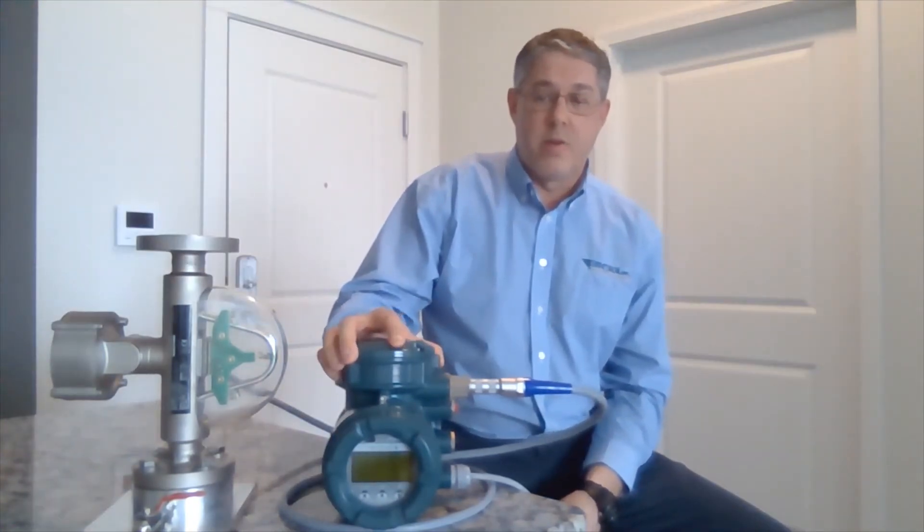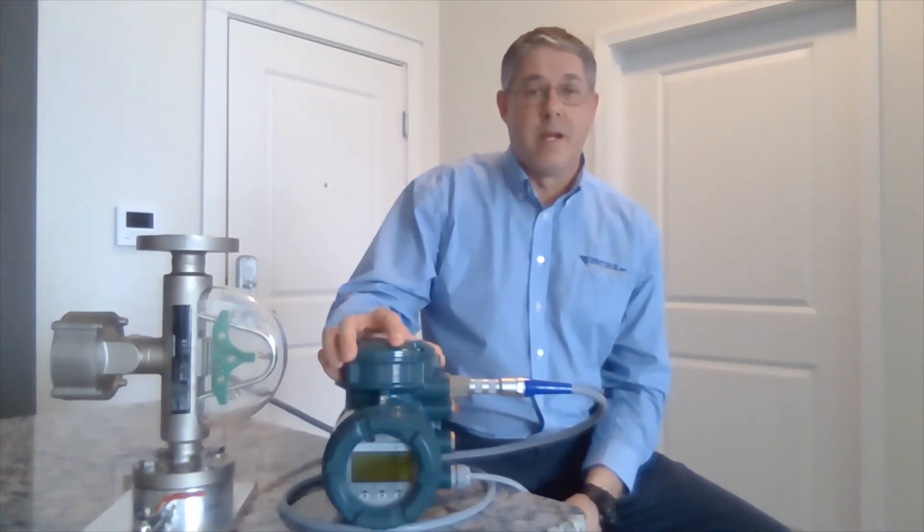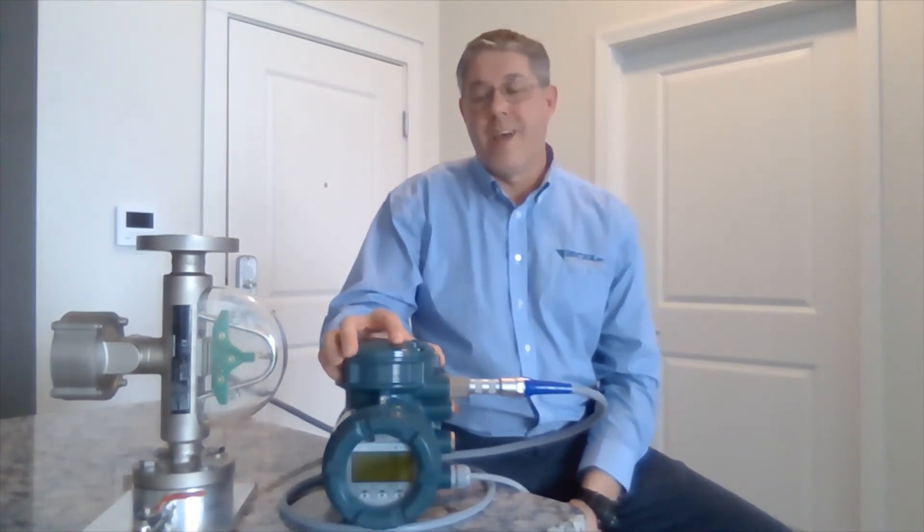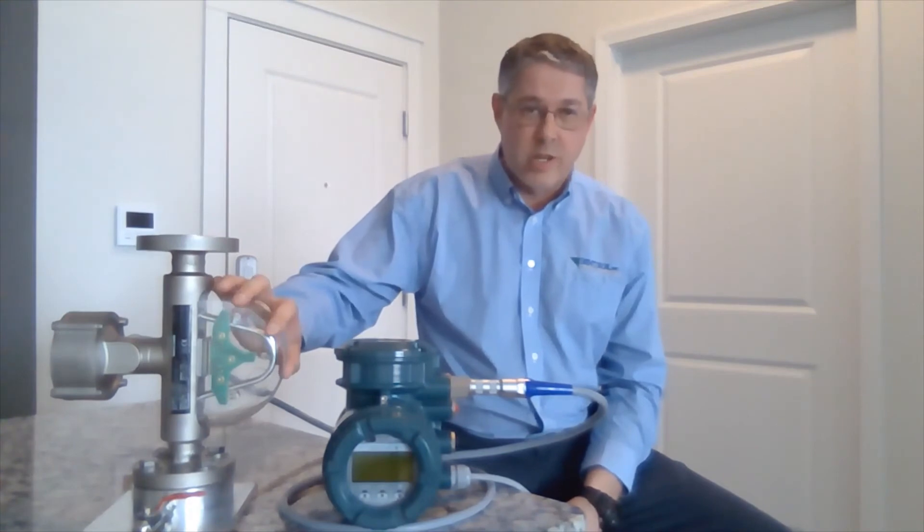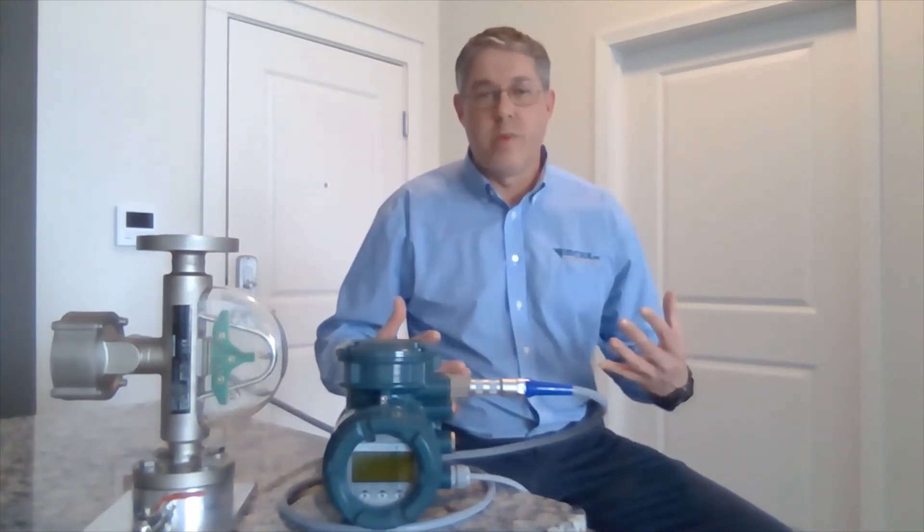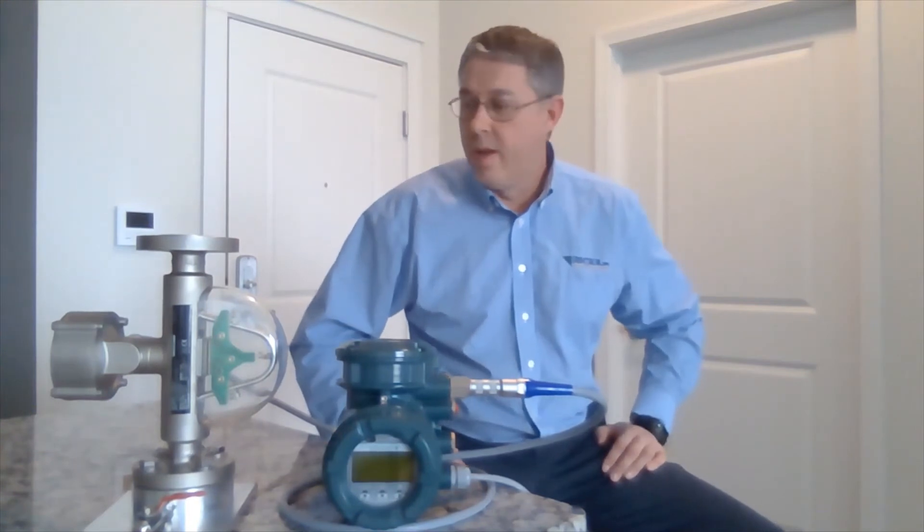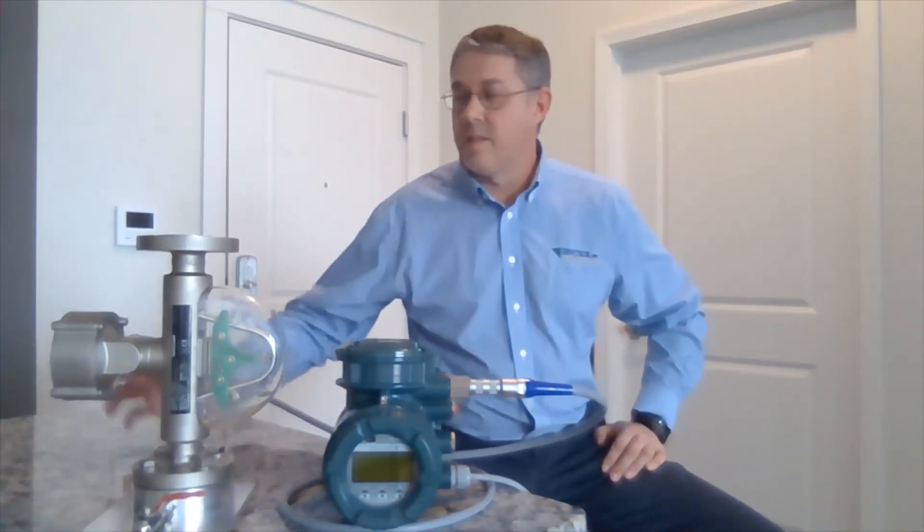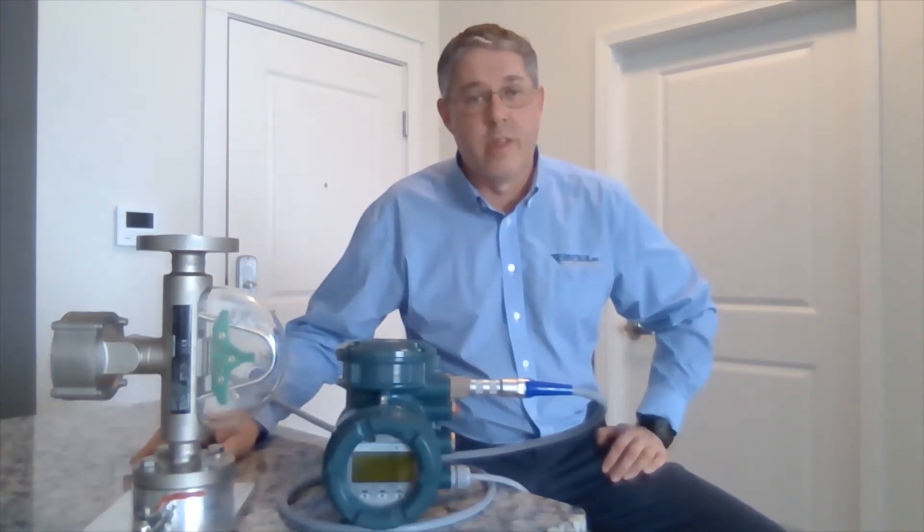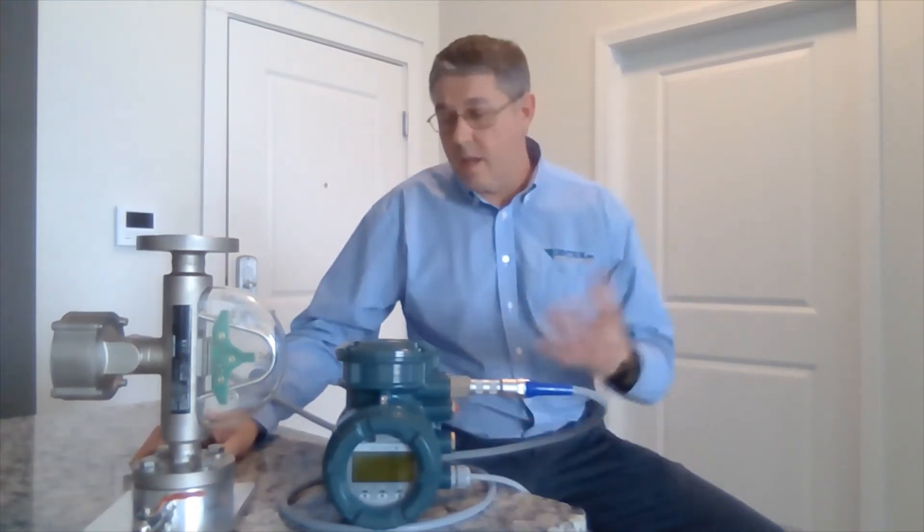The really nice thing about the Rotomass TI products is it has something called a total health or a total tube check function. This is the function where the meter will run through a verification and a tube integrity program. This basically tells us if the meter is still operating within manufacturer's specifications, and it can extend the life of the calibration of the unit.